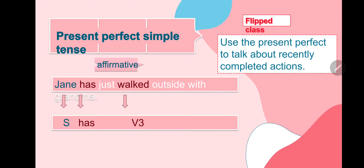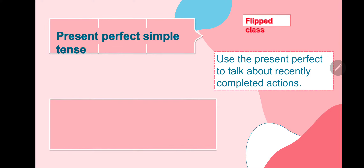Use the present perfect to talk about a recently completed action. When we use has/have with the verb in the third form (past participle), it means the action is completed and finished.